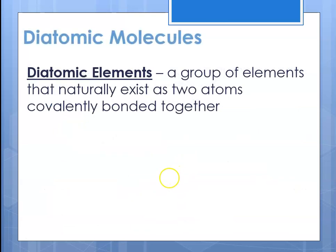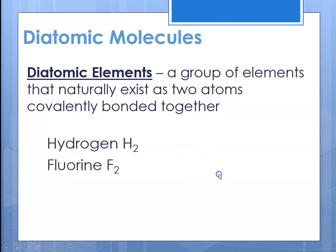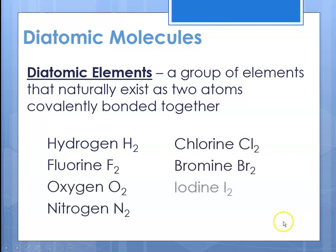Before we go on to that, I'd like to talk about the diatomic molecules. There are a group of elements called diatomic elements that naturally exist as molecules of two atoms covalently bonded together. The seven that we want you to memorize — we call them the Magnificent Seven — are hydrogen, fluorine, oxygen, nitrogen, chlorine, bromine, and iodine.